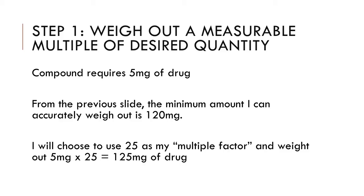So first I'm going to choose my multiple factor, and I'm going to pick 25. I will weigh out 5 mg times 25, which is a total of 125 mg of drug. Note that I could have chosen a different multiple as long as it got my amount of drug to be greater than 120 mg. I chose 25 because that gets me to 125 mg, which is very close to the 120 mg minimum — I don't want to waste any more of the active drug ingredient than I need to.